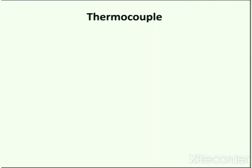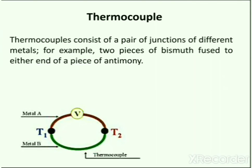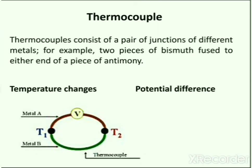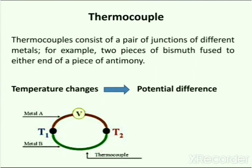The thermocouple detector consists of a pair of junctions of different metals — for example, two pieces of bismuth fused to either end of a piece of antimony. The sensing element is composed of small thermocouples on a silicon chip which absorb the energy and produce an output signal. This detector works on the phenomenon that when a closed circuit is formed by joining two dissimilar metals at two junctions maintained at different temperatures, an electromotive force is induced in the closed circuit.